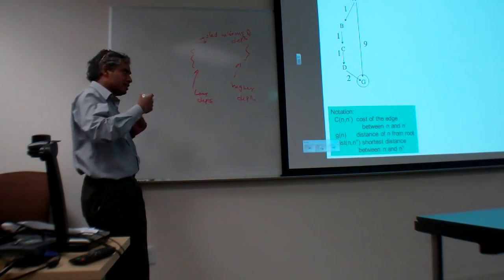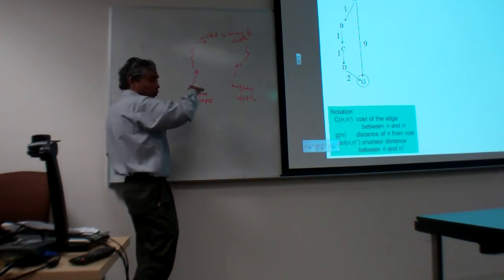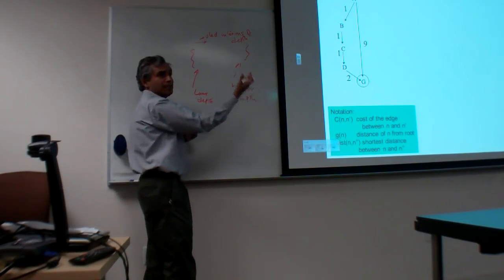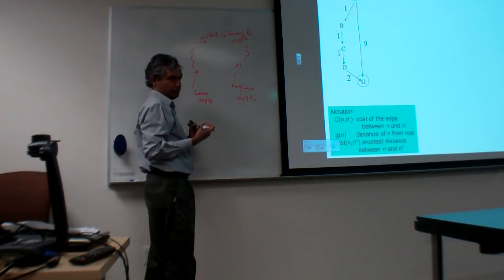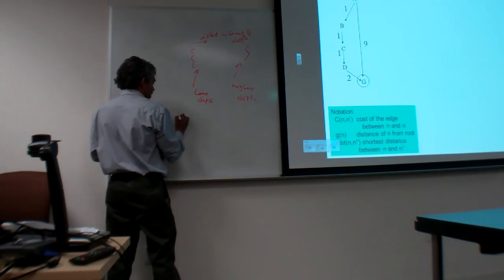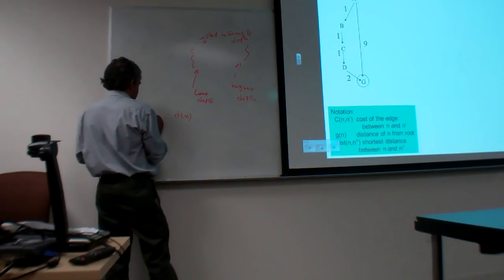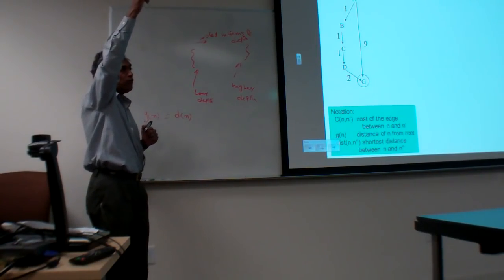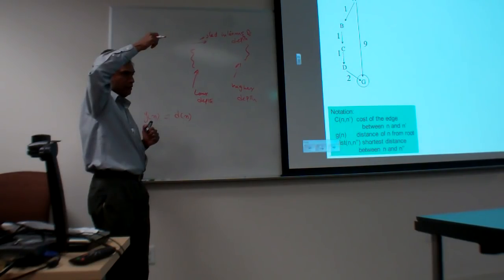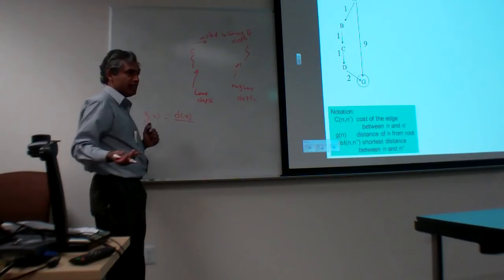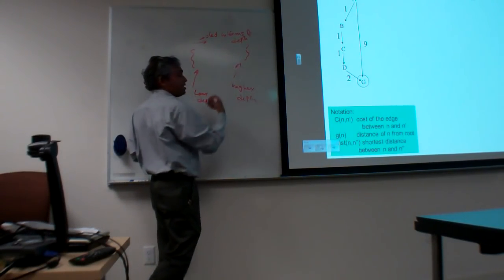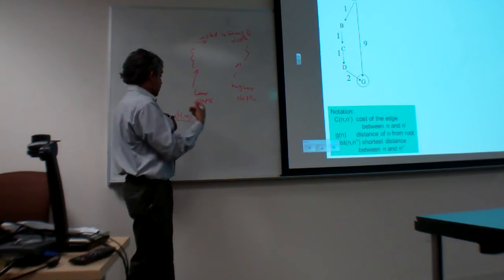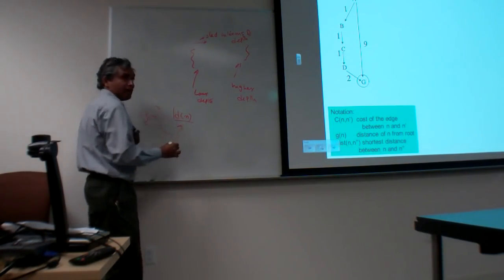It turns out that since the breadth-first search is essentially going level by level, the ones that get generated always wind up having higher depth than everybody who's on the queue, so they just go to the end of the queue. In this scenario, depth D of N is also the cost G of N. You use the notation G to talk about the cost of going to that node from the root node. So if you think of breadth-first search as a prioritized queue, the priority happens to be G of N, where G of N was defined as D of N.